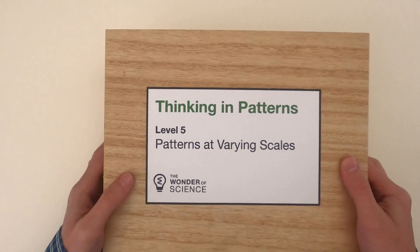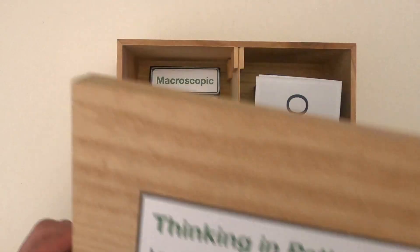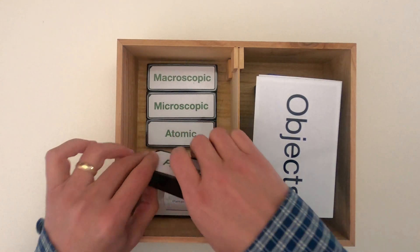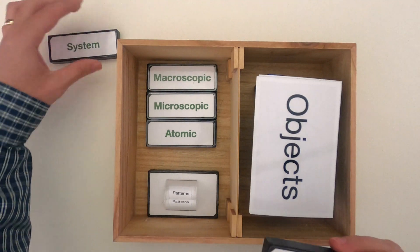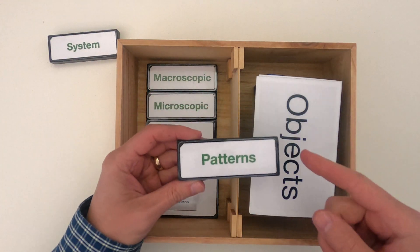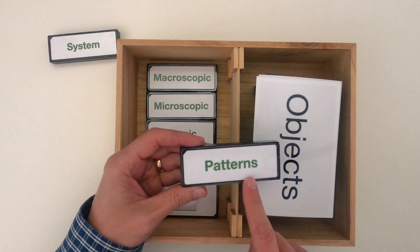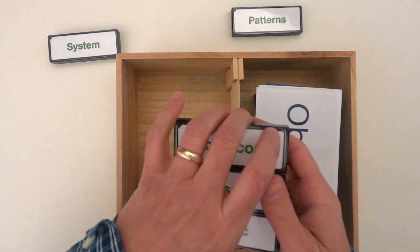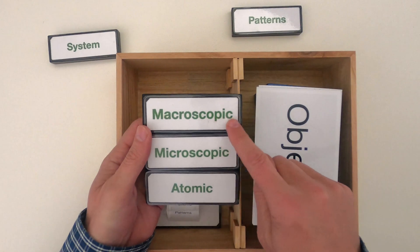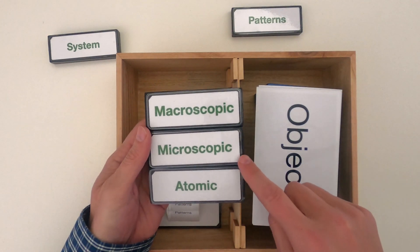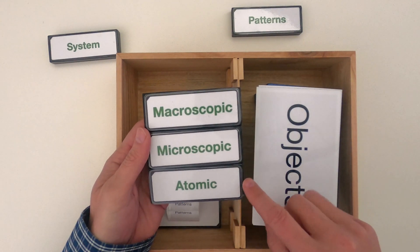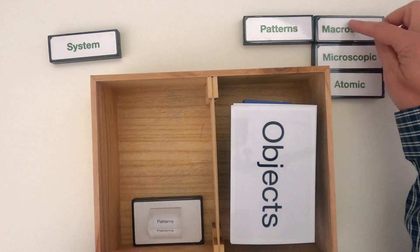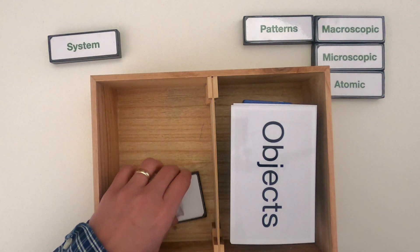Hi, it's Mr. Andersen and this is Thinking in Patterns, Level 5: Patterns at Varying Scale. When you're looking at patterns you should always start by defining the system that you're going to investigate. In this video we're going to talk about patterns and what patterns we see at varying scales — all the way from the macroscopic, what you can see with your naked eye, to things you can see under the microscope, to things you would have to understand through an atomic model. So we're going to be looking for patterns at each of these different scales.